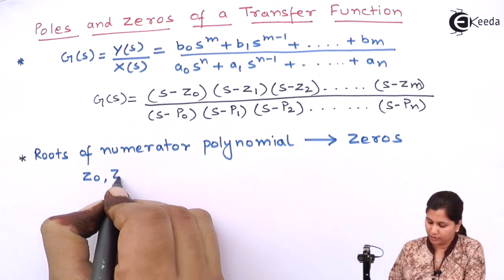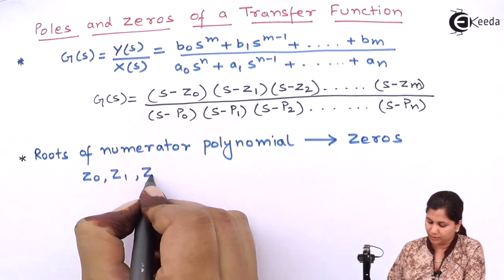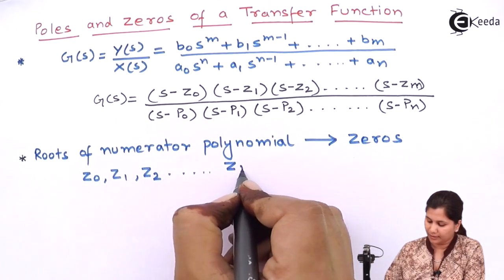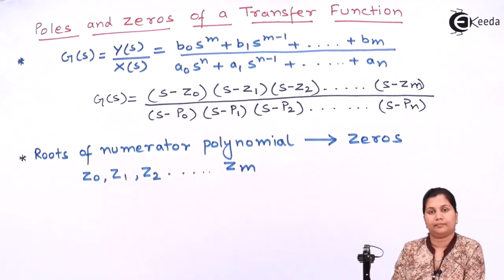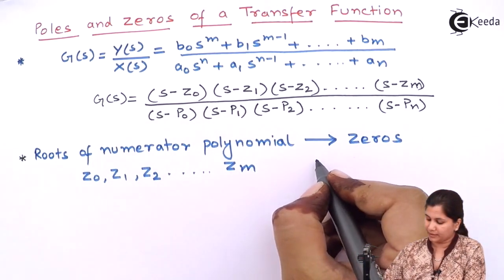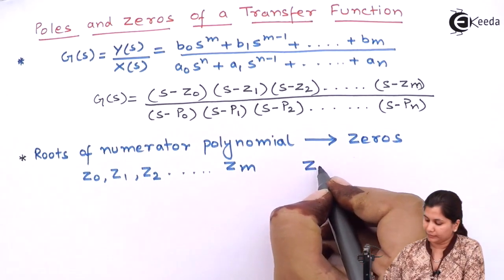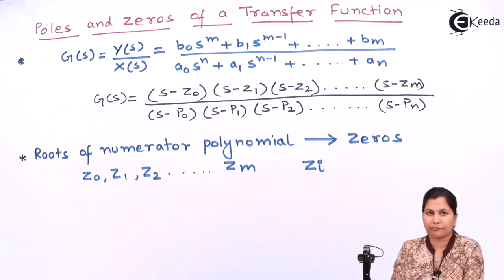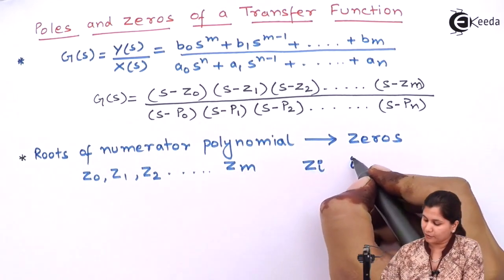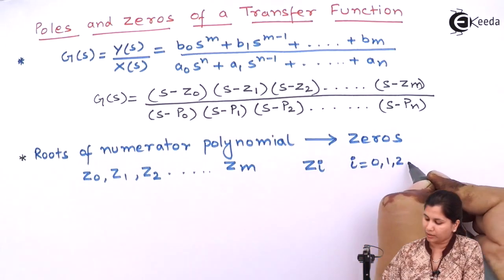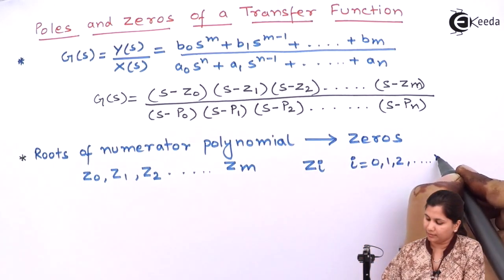The zeros are Z0, Z1, Z2 till Zm. In general form, Zi are the zeros of the transfer function, where i ranges from 0, 1, 2 till M.